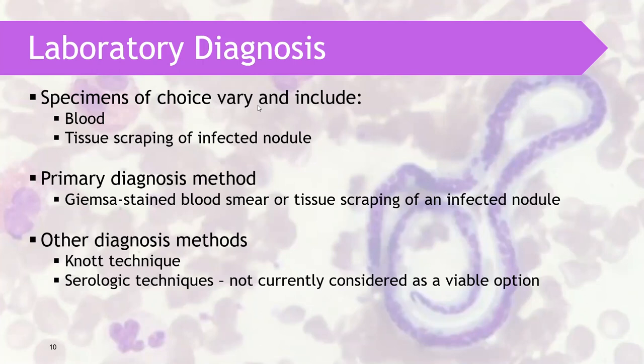Since filaria resides in the bloodstream, blood can be the specimen of choice. Aside from blood, you can also use tissue scrapings of infected nodules, depending on the parasite. The primary diagnosis is the use of blood using a Giemsa-stained blood smear, or a Giemsa-stained tissue biopsy of nodules. We also have the Knott concentration technique, which uses blood and formalin, then fixes it on the slide for visualization.